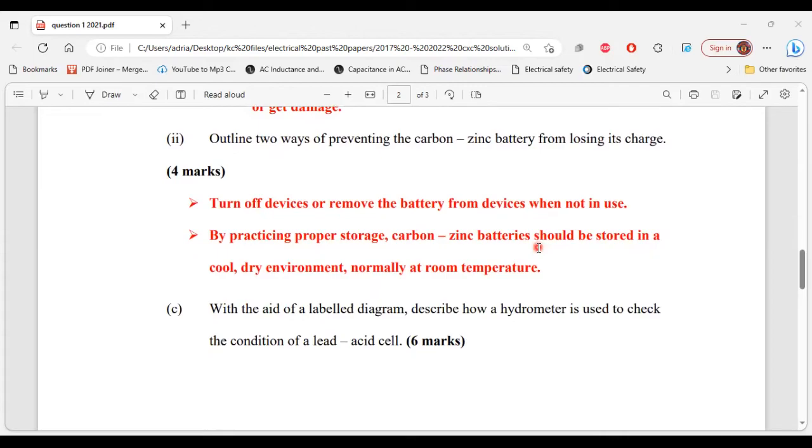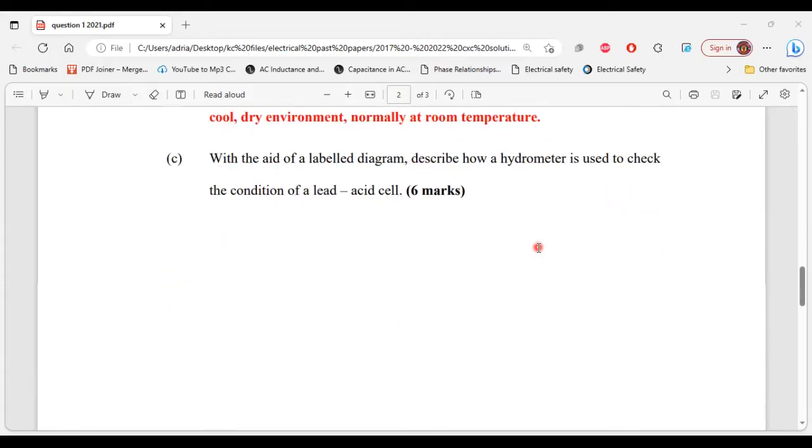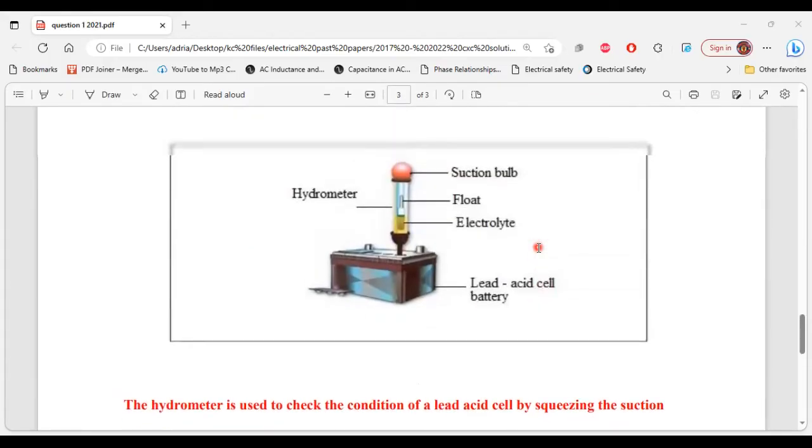It says with the aid of a labeled diagram, describe how a hydrometer is used to check the condition of a lead acid cell. Here we have the diagram of the hydrometer checking the condition of a lead acid cell. So here we have the hydrometer. This part of the hydrometer is the suction bulb. This part below the suction bulb, we have the float, and below the float we have the electrolyte.